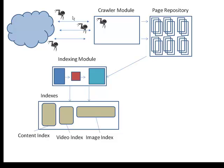Next, these indexing modules output their data into a different set of indexes. And these indexes can be of different types. For example, you might have a content index, you might have a video index or an image index.